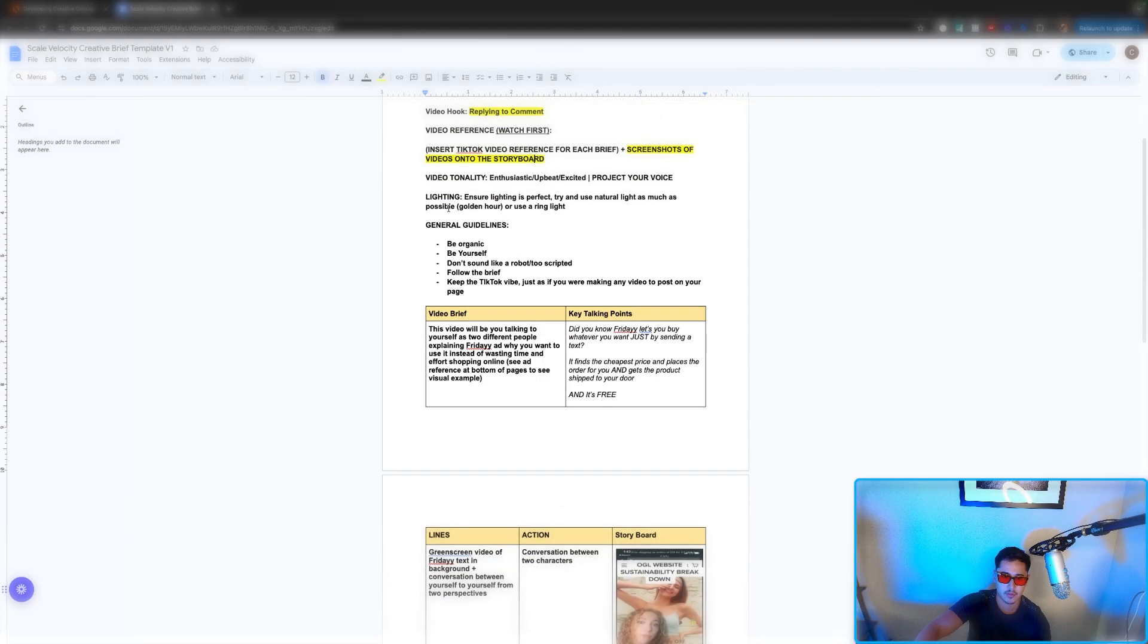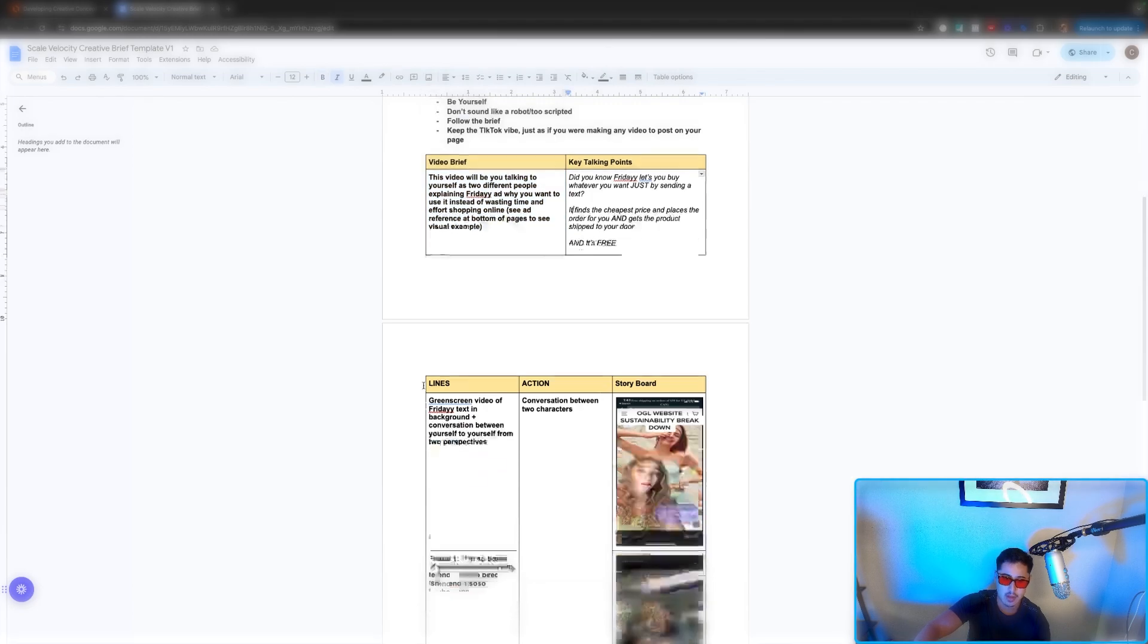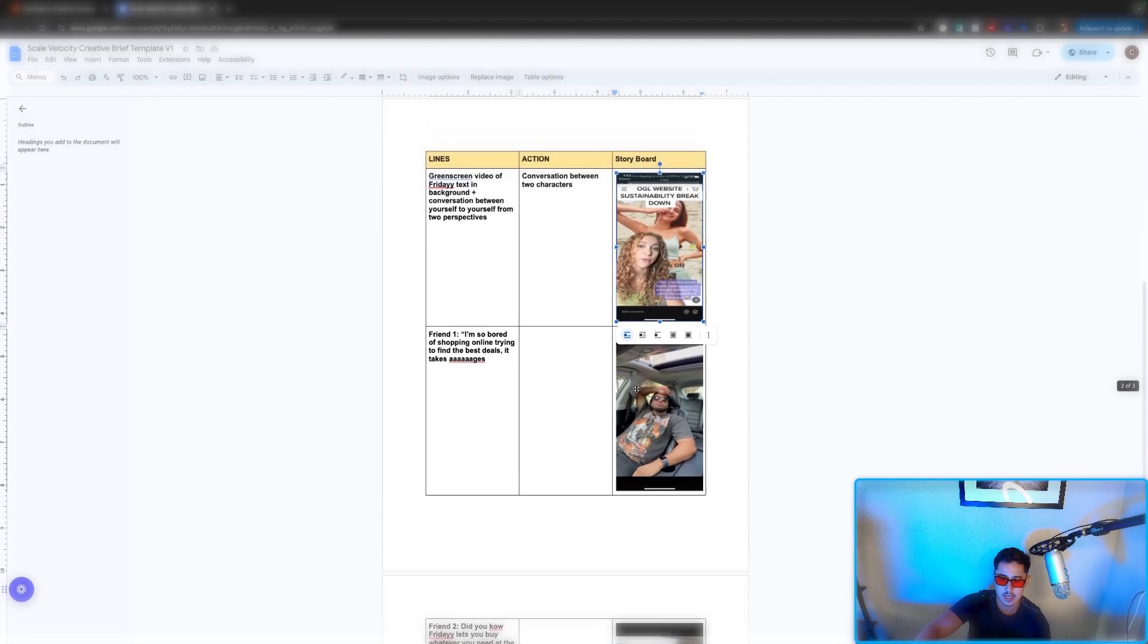And then from there, we have, of course, tonality, lighting, general guidelines, be organic, be yourself, video brief of just overall the summary of the video, what we're going to talk about. And then we have lines, action, storyboard. So as you can see, everything is pictured out.